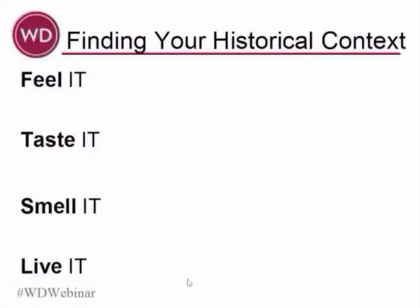It's very important that you find your historical context before you get started. I'll give myself as an example. I knew one of the things I wanted to do was to write a historical novel. First of all, what history do I like? Well, I like Egyptian, I like Renaissance, but I really like the 1920s. I can feel it, taste it, smell it, live it. So what you need to do is ask yourself what historical genre or time period you can feel in your bones, because that's going to make a big difference in your writing.